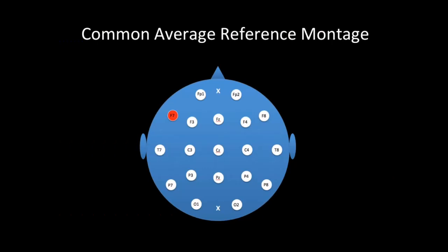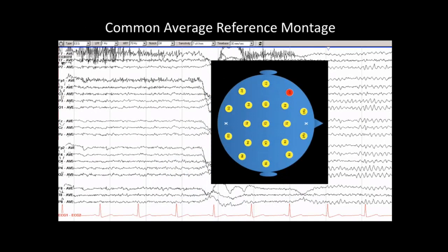Another common montage is the common average reference montage. In a single channel, rather than comparing two adjacent electrodes as in a bipolar montage, we compare an electrode of interest to an average of the signals from the rest of the head. The layout of an average reference montage is very similar, but each channel is compared to an average of the rest of the head.